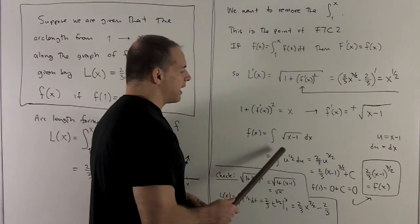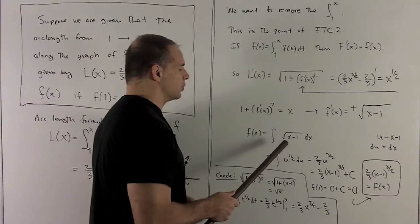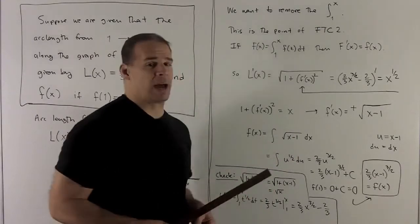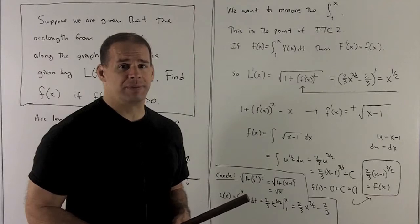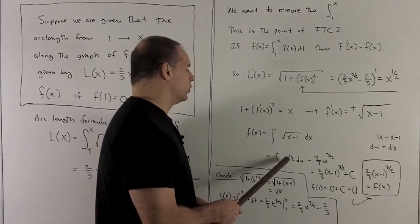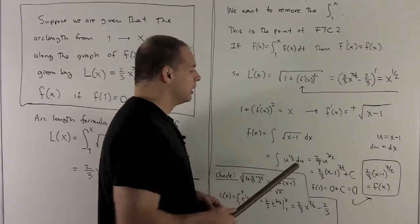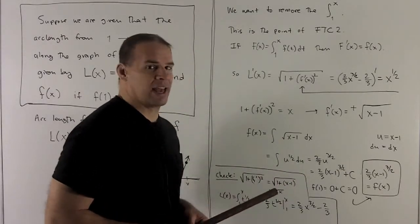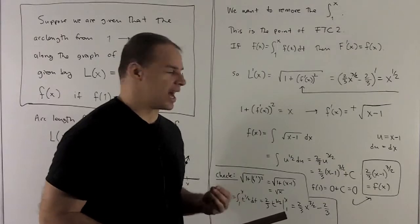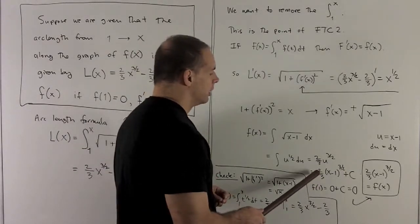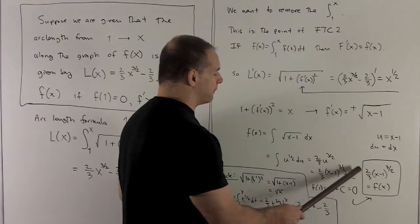So we're looking at an indefinite integral here. This is a substitution. u is going to be equal to x - 1. So we substitute and follow our nose. When we substitute, we get u^(1/2) du. I add 1 and flip it over. And then I'm going to substitute back in the x - 1 and then plus a constant. So here's our candidate for the function.